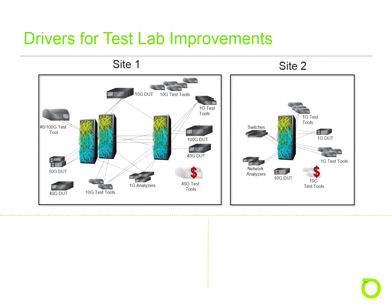A typical TestLab is made up of test tools, supporting infrastructure like patch panels and cabling, and the systems under test. In this diagram, Site 1 has some 10-gigabit test tools that are not being used — they aren't even cabled into the infrastructure. Site 2 needs more 10-gigabit test tools, and this is preventing a test cycle from starting.